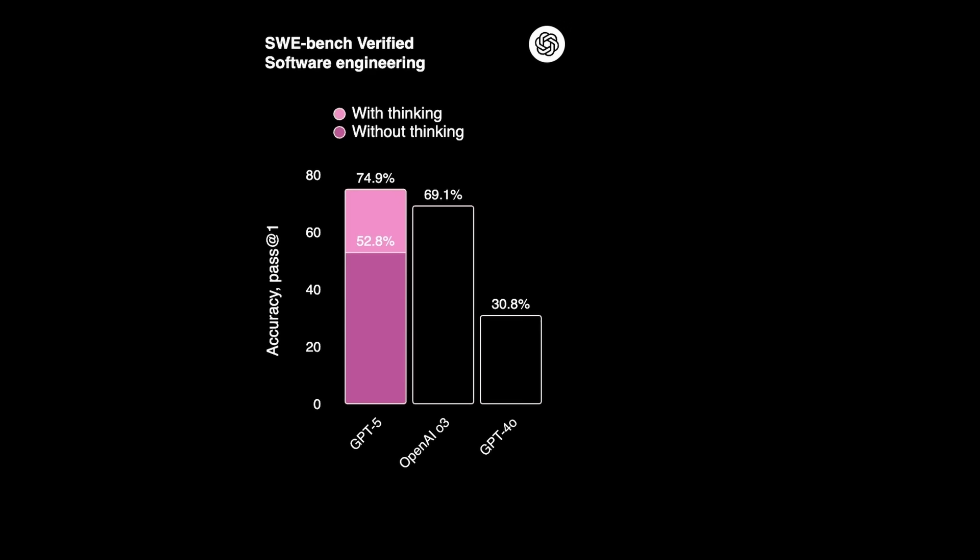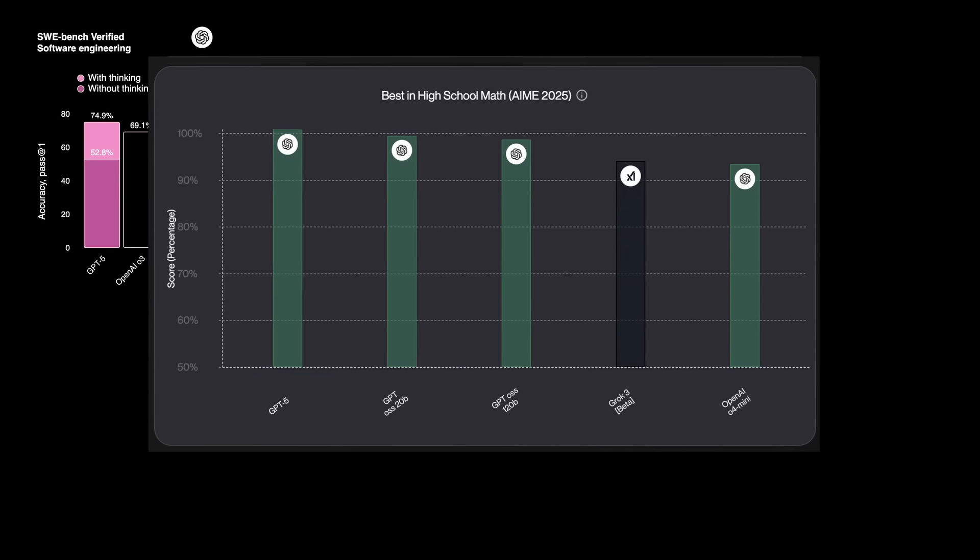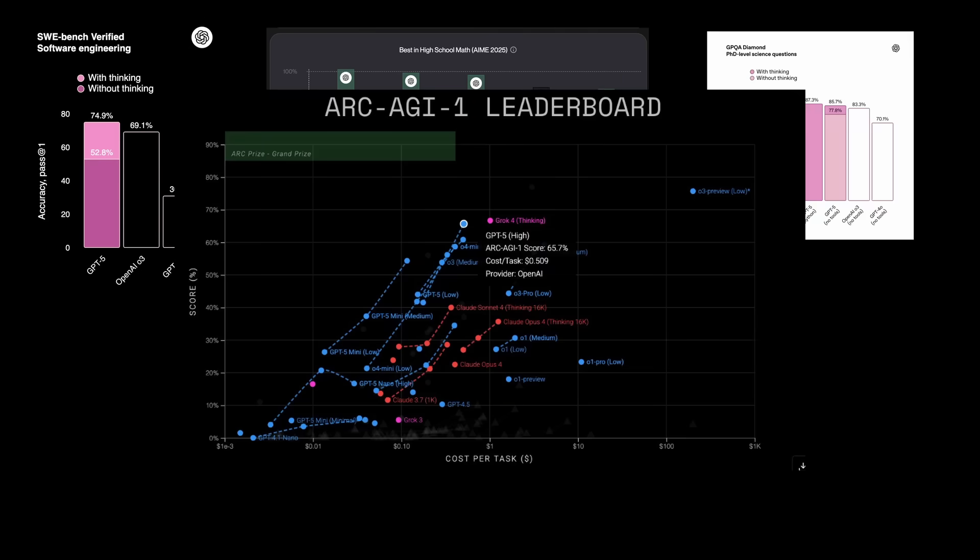Now let's talk about performance. Unsurprisingly, GPT-5 beat almost everyone in almost every benchmark except for ARK-AGI, which is still held by Grok4.